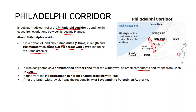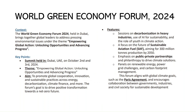The corridor runs from the Mediterranean Sea in the west to the Kerem Shalom crossing in the east with Israel. After Israel's withdrawal, it was controlled by Egypt and the Palestinian Authority, but now Israel is demanding control of the Philadelphia Corridor as part of ceasefire negotiations.